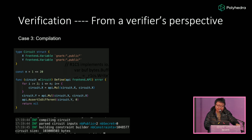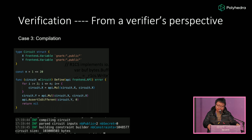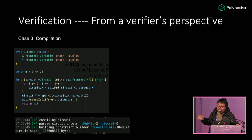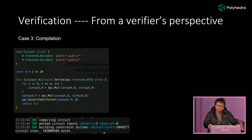So let's dive into the technical details. Here is an example circuit computing a very simple computation. But if you compile the circuit, you will find that this compiled R1CS circuit is actually very large — on the order of 100 megabytes. But the source code is actually very small, very short.